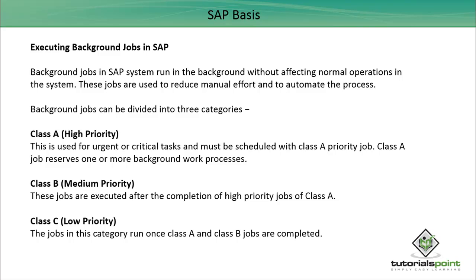If you have any critical task you should define it as Class A, as these jobs will run at the highest priority. Class B is medium priority — these jobs are executed after the completion of Class A jobs. Class C jobs are low priority and they run when your Class A and Class B jobs are completed.